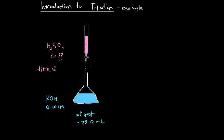We've filled the burette with sulfuric acid and used a pipette to put 25 millilitres of potassium hydroxide into the conical flask. Then we've let the sulfuric acid out drop by drop until we've reached the equivalence point, and figured out the change in volume of the sulfuric acid solution in the burette. We've determined that the titar volume is 22.5 millilitres.